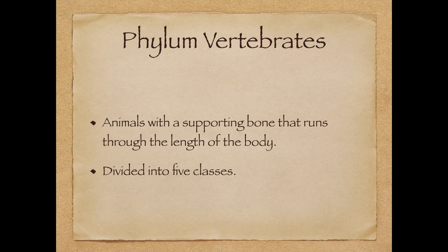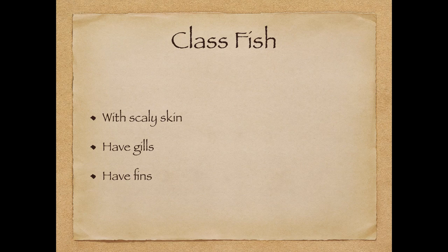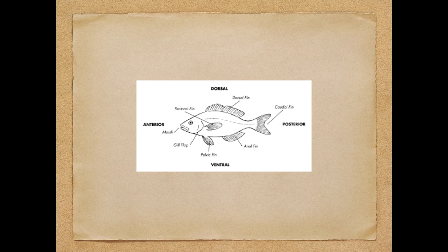The most obvious visible feature is the backbone, which humans, dogs, and cats all have. Fish are animals that live in water only. They have scaly skin, gills, and fins. They breathe by extracting dissolved oxygen from seawater or fresh water through their gills. Here's a picture of a fish — you can see the dorsal fin, the caudal fin, other fins, and the gills on the side of the body.